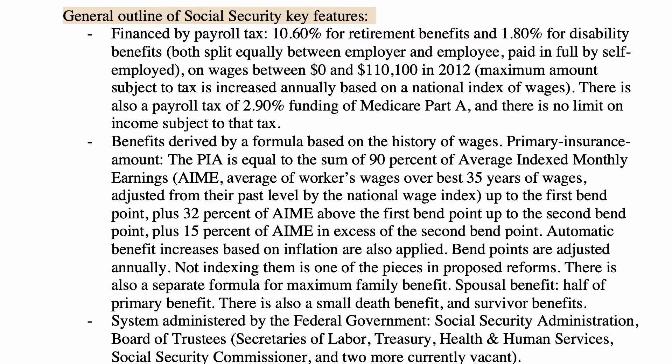There is also a separate formula for maximum family benefit. There is a spousal benefit equal to half of the primary benefit — so if you worked and your spouse stayed home, upon your retirement your spouse receives half your benefit. There is also a small death benefit and survivor benefit for surviving minor children. The system is administered by the Social Security Administration, which has a board of trustees consisting of the Secretaries of Labor, Treasury, and Health and Human Services, the Social Security Commissioner, and two additional members.